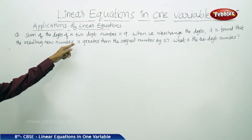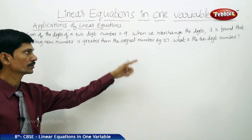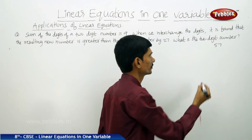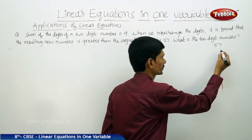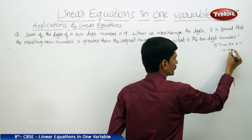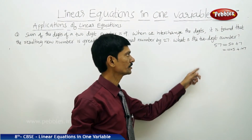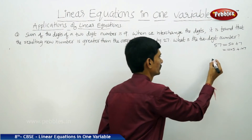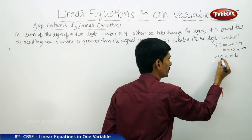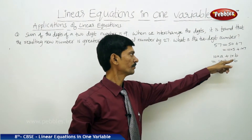The next problem: the sum of the digits of a two-digit number is 9. When we interchange the digits, the resulting new number is greater than the original number by 27. What is the two-digit number? For any two-digit number like 57, the tens place is 5 and units place is 7. We can write 57 equals 10 into 5 plus 7. If a number has a in tens place and b in units place, the number equals 10a plus b.